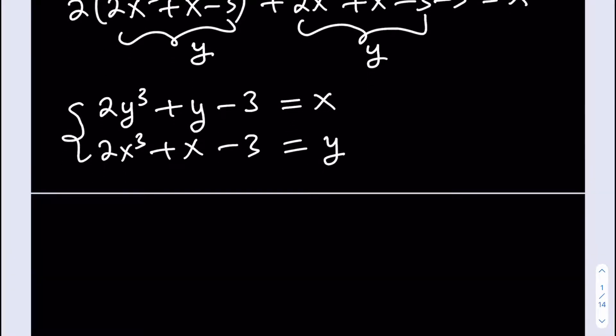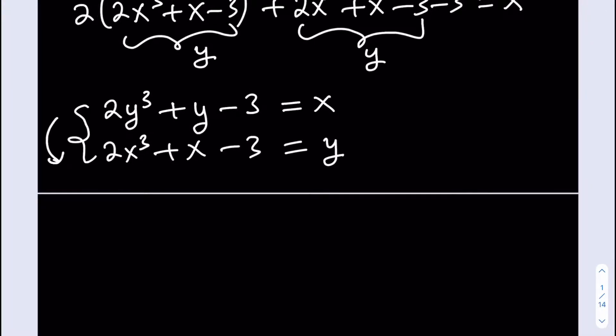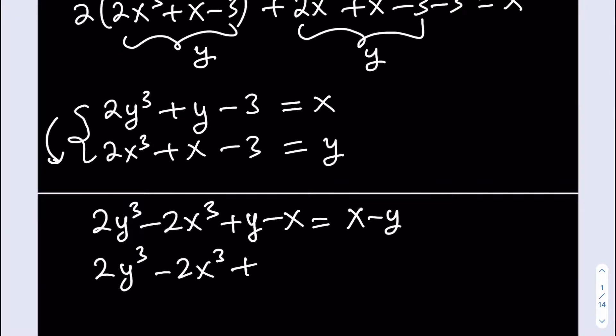Now, at this point you might be thinking, what am I going to do? Am I going to substitute? Nope. If you substitute y or x, you're going to go back to square one. So what we're going to do here is actually take advantage of symmetry. We're going to be subtracting these equations side by side. If you subtract this way, we get 2y³-2x³+y-x and negative 3s cancel out. On the right hand side, I'm going to be getting x-y. If I put everything on the left, I'll be getting 2y³-2x³+2y-2x=0.